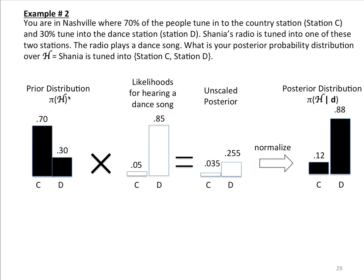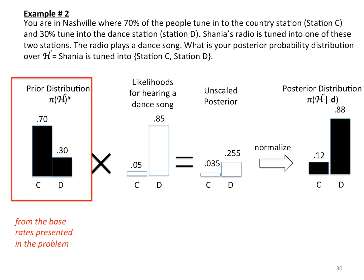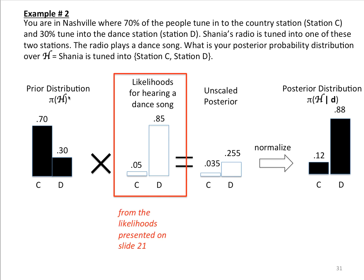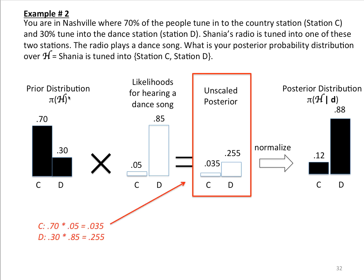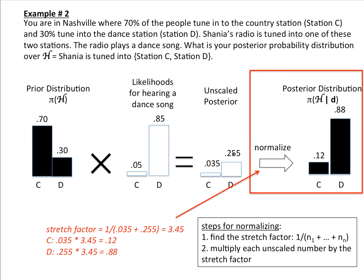Let's go through the steps. The prior distribution is gotten from the base rates presented in the problem. The likelihoods come from the table presented on slide 21. The unscaled posteriors are obtained through multiplication: 0.7 times 0.05 is 0.035, and 0.3 times 0.85 is 0.255. That's not yet a probability distribution, so you need to normalize. The stretch factor is 3.45 — meaning you need to puff the distribution up by that factor. When you do that, the posterior probability that Shania is listening to the country station is 0.12, and the posterior probability that she's listening to the dance station is 0.88.